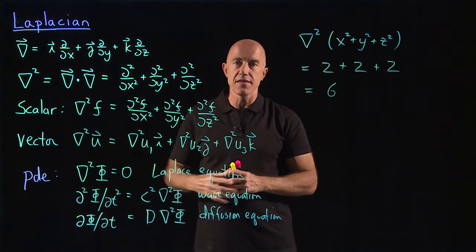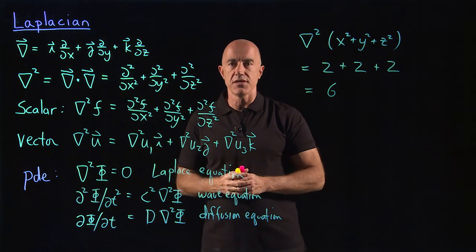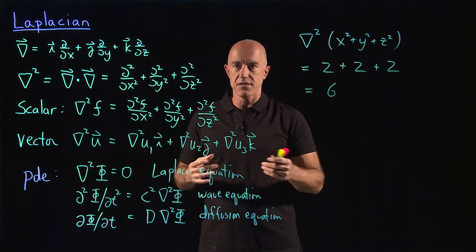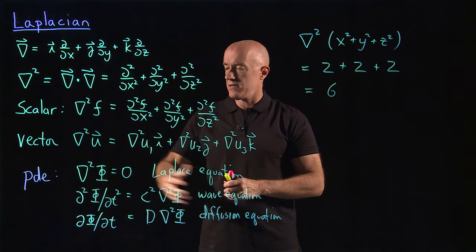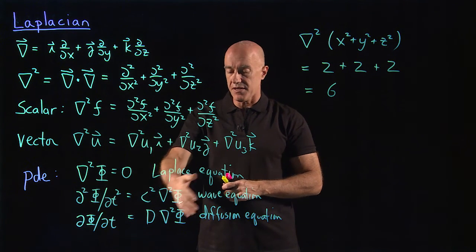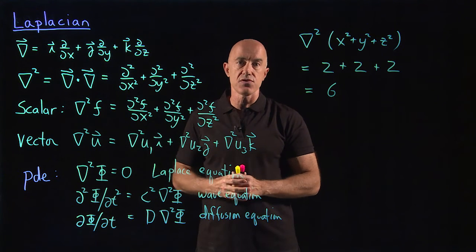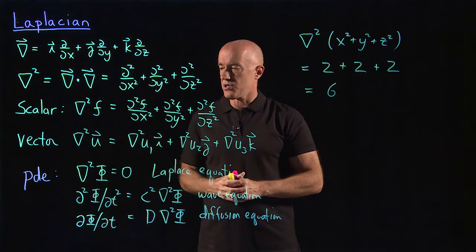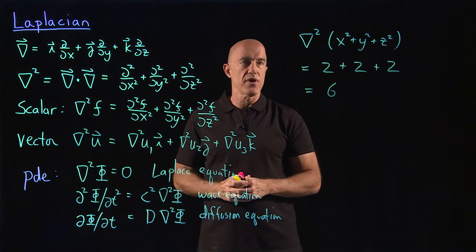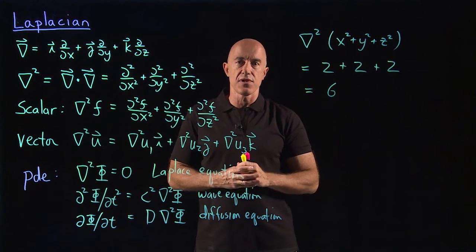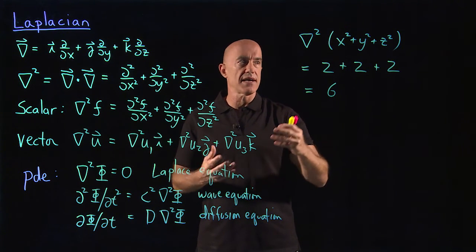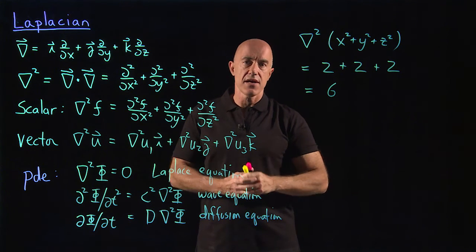You see a term like this in the Navier-Stokes equations, which is the equations governing fluid motion. It shows up in many other PDEs, including the Laplace equation, wave equation, and diffusion equation. It also shows up in the Schrodinger equation for quantum mechanics. And this is an example of how you compute the Laplacian given some scalar field.